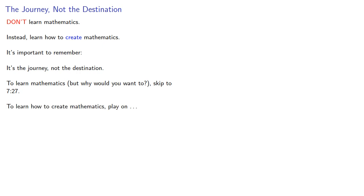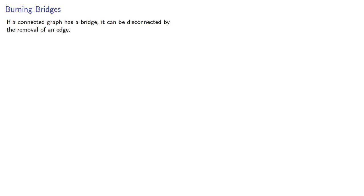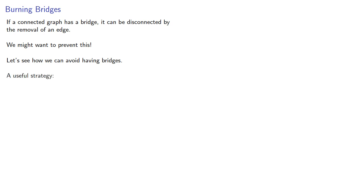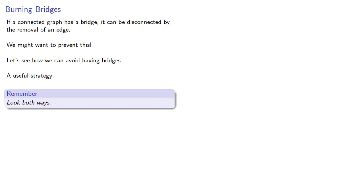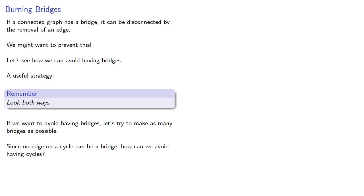To learn how to create mathematics, play on. Remember that if a connected graph has a bridge, it can be disconnected by the removal of an edge. We might want to prevent this, so let's see how we can avoid having bridges. A useful strategy is: look both ways. If we want to avoid having bridges, let's try to make as many bridges as possible. Since no edge on a cycle can be a bridge, how can we avoid having cycles?